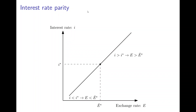We can depict the interest rate parity graphically with the interest rate on the vertical axis and the exchange rate on the horizontal axis. The equilibrium point is where the current exchange rate equals the expected exchange rate and the domestic interest rate equals the foreign interest rate. Whenever the domestic interest rate is higher than the foreign rate, today's exchange rate exceeds the expected future rate and we expect depreciation; when it is lower, we expect appreciation.